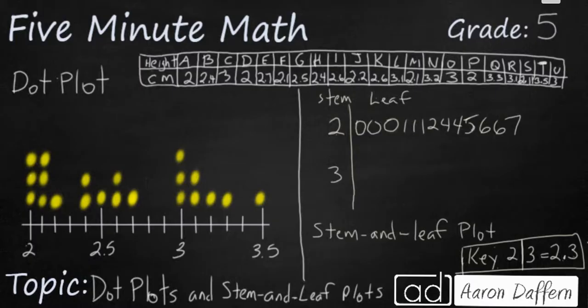When I go to 3 I start on the next row of my leaf. I have three 3.0's, two 3.1's, a 3.2, a 3.3, and a 3.5. So if you couldn't tell from our original data, you could look at the stem and leaf plot and see that there are many more numbers in the 2.0 to 2.9 range than in the 3 stem, from 3.0 to 3.5.